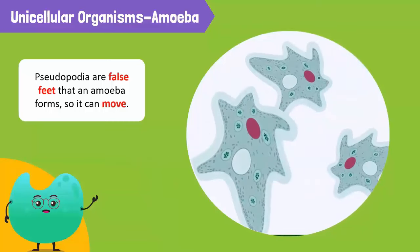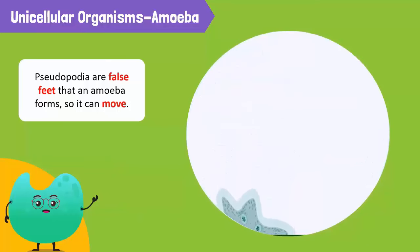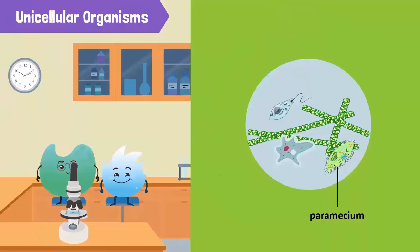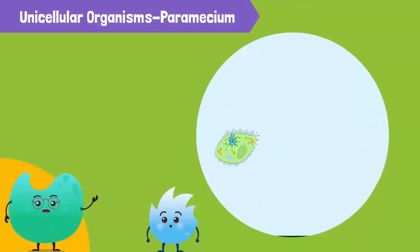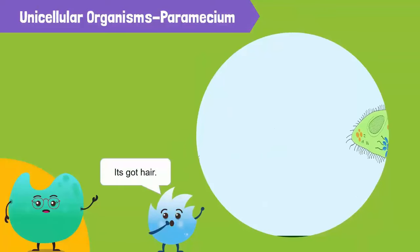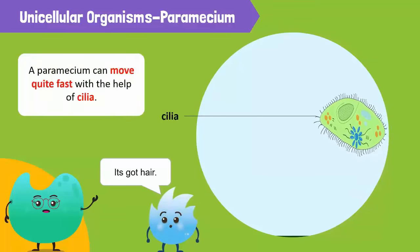Another very common unicellular organism is paramecium. It looks like it's got hair! Yes — these hair-like structures are called cilia. A paramecium can move quite fast with the help of these small hair-like structures.